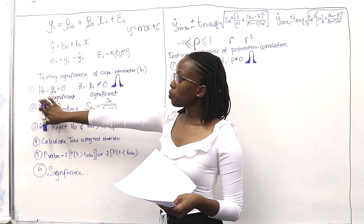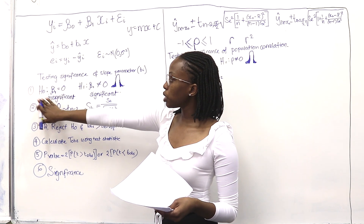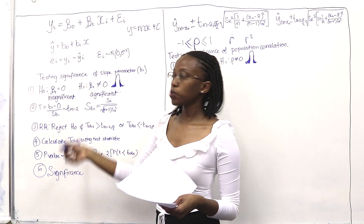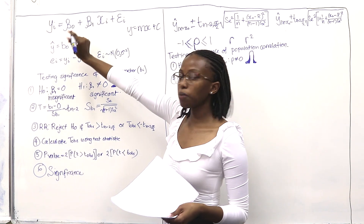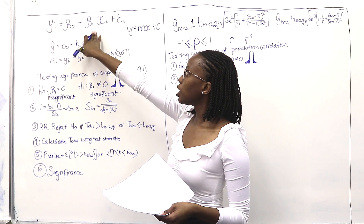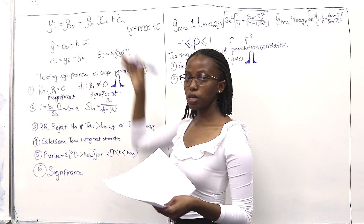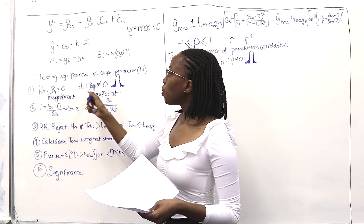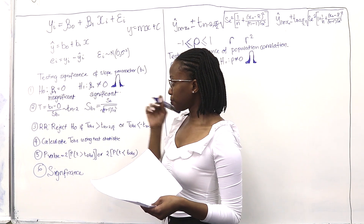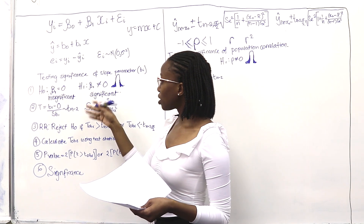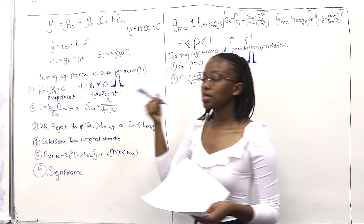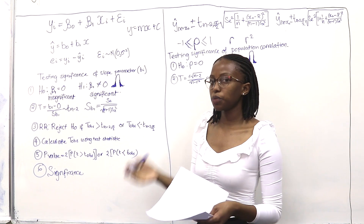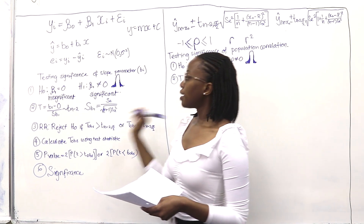If H0 were proven true, it would mean that the slope is insignificant — if beta 1 is 0, then x will automatically be 0. Our H1 says that beta 1 is not equal to 0, which means it's significant, meaning there is a relationship between x and y.